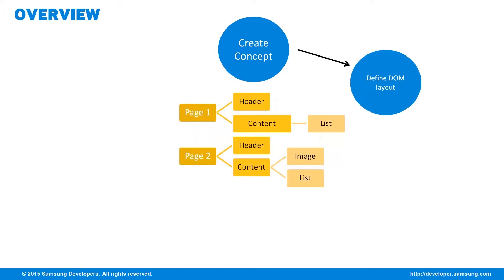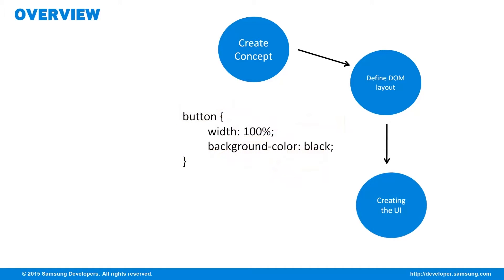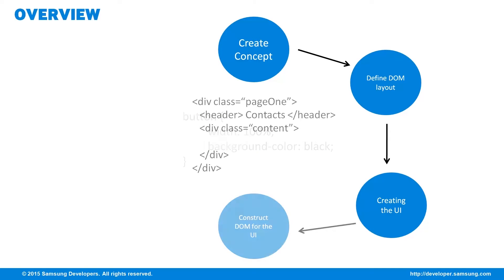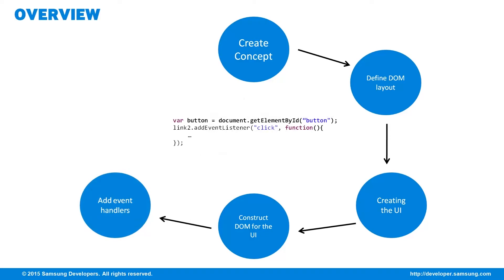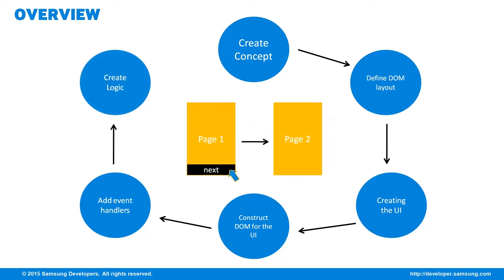Second is defining the DOM layout of the page — this is where we create the structure of the app. In our example, the first page may contain a header and a list, while the second page may contain an image, a list of details, and a footer with buttons for actions. Next is creating the UI or UX for the application, and after that, we can start constructing the DOM for the UI.